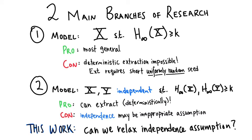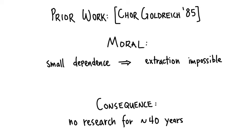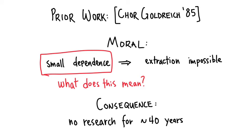So in this work we ask the natural question: can we relax this independence assumption? This is a natural question, and in fact it was asked by Benny Shore and Odette Goldreich in 1985 when they initiated this branch of research into two-source extractors. They proved a theorem whose moral is that if these two sources have even very small dependence, then extraction becomes impossible. And this negative result unfortunately seems to have led to a lack of further research in this topic for the past 40-odd years.